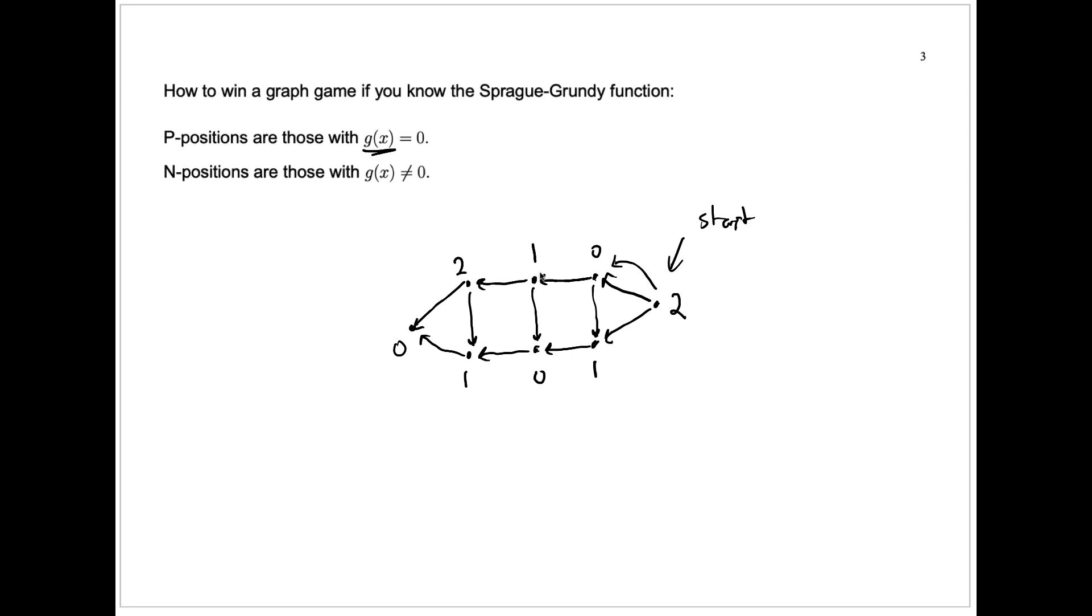And then our opponent is left in a p position at a Sprague-Grundy number zero. It doesn't matter whether the opponent plays to this one here or this one here. Either way, we play down to that zero there, which is a p position. And then our opponent is forced to play to that one, and we are forced to play to the zero. And of course, we win.